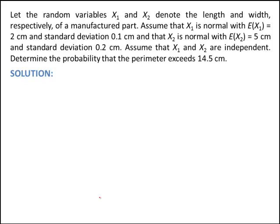Let the random variable y be the perimeter using x1 and x2. The perimeter is 2 times x1 plus 2 times x2, since x1 and x2 are the length and width of the part. We'd like to know the probability that the perimeter exceeds 14.5 centimeters — that's the probability that y is greater than 14.5.